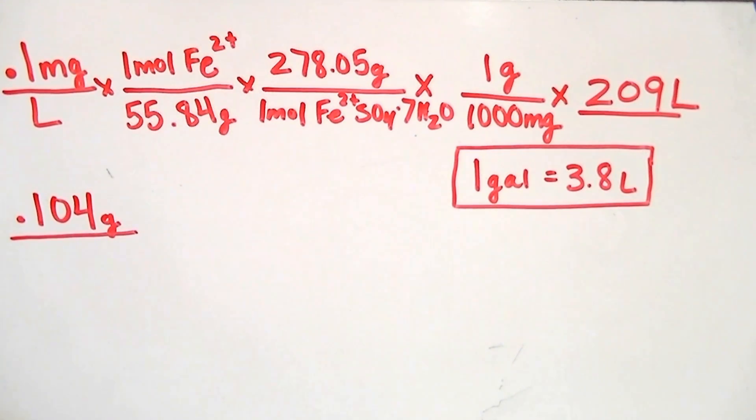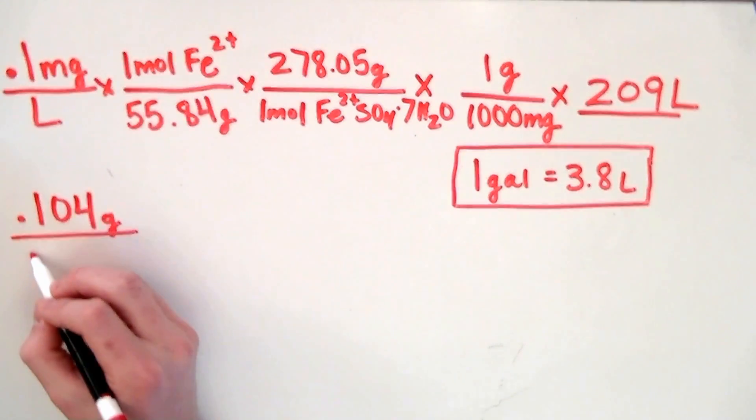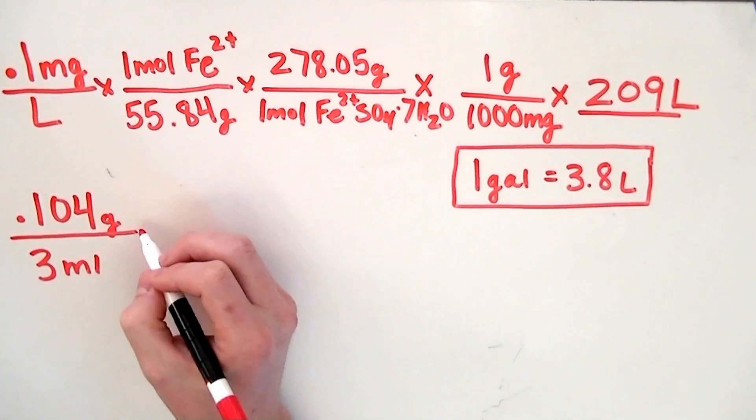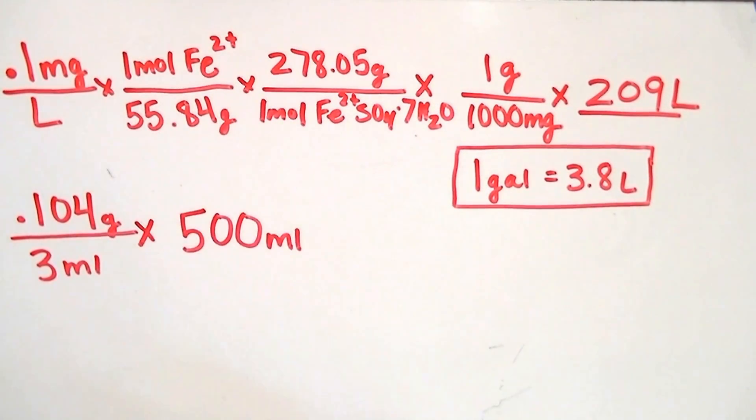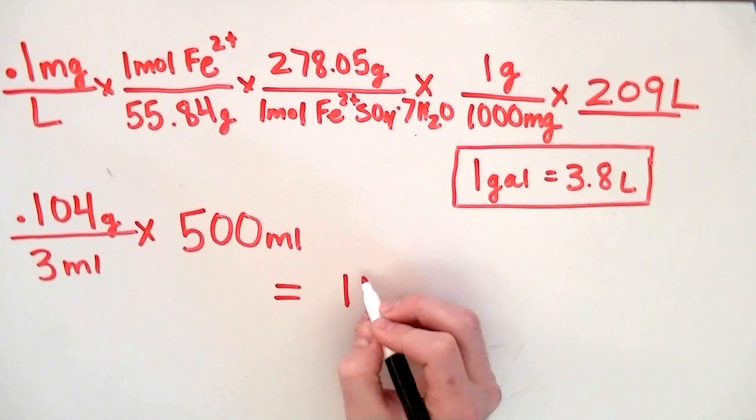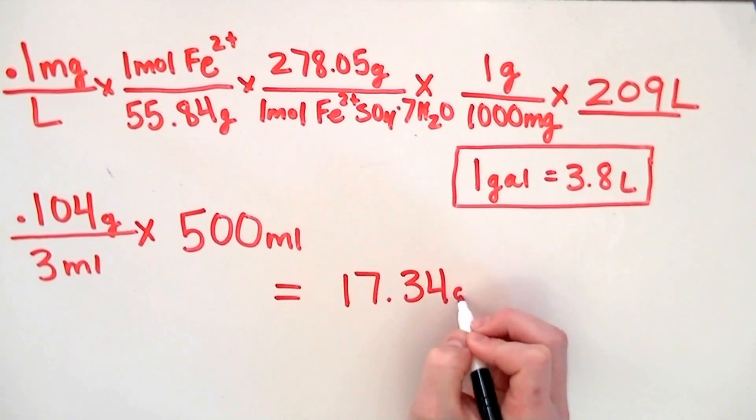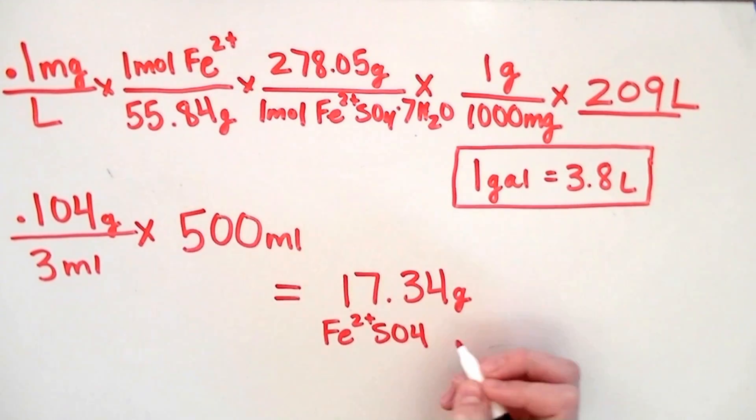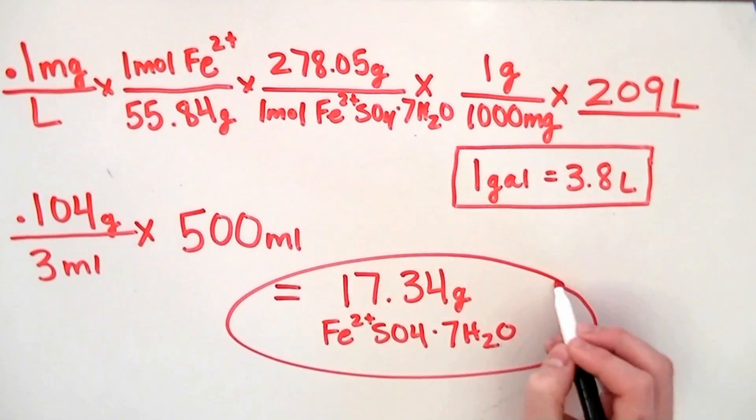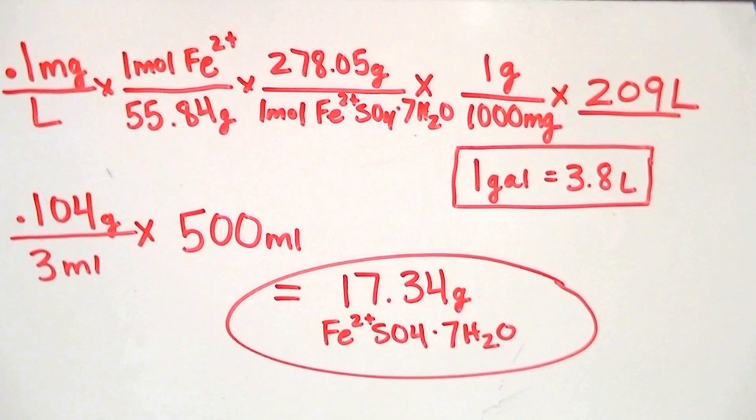Since we're making a solution, we get to decide the volume of each dose. We're going to choose 3 mL. The last step involves multiplying by 500 mL, which is the volume of the container we're going to house our fertilizer solution in. When we do this calculation, we get 17.34 grams, which is the amount of iron 2 sulfate you'll need to add to your 500 mL container. Every time we extract 3 mL from this solution and put it in our aquarium, we'll achieve a concentration of 0.1 mg per liter iron 2.